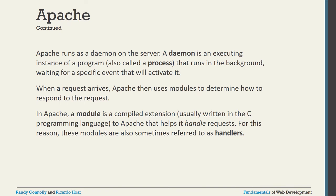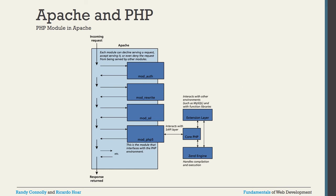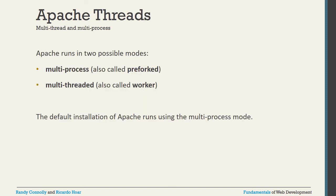One very important thing — what is Apache? Apache is just like a daemon server. It runs in the background and waits for a particular event whenever it will be activated. When a request arrives, Apache uses its modules to determine how to respond to that request, and those modules are written in the C programming language to handle all requests — sometimes called handlers. Apache runs in two possible modules: one is called multi-process and another is called multi-thread. The default installation of Apache runs using the multi-process mode only.